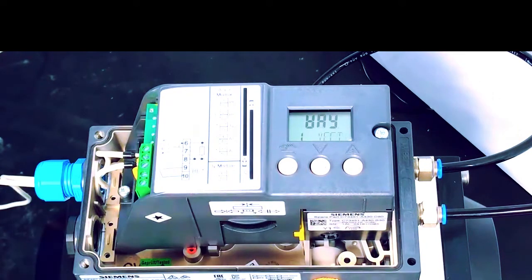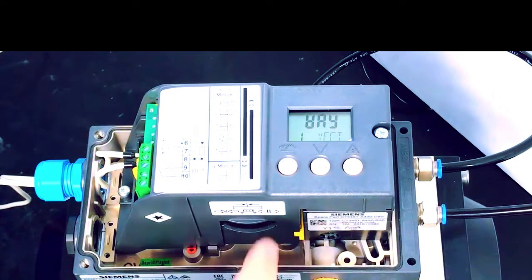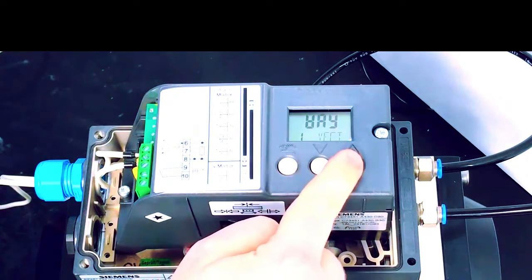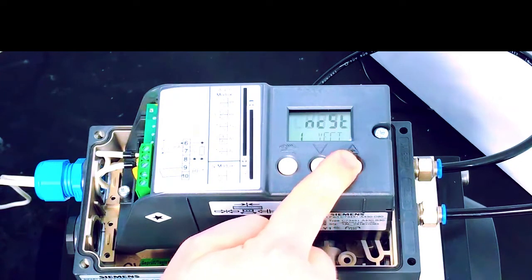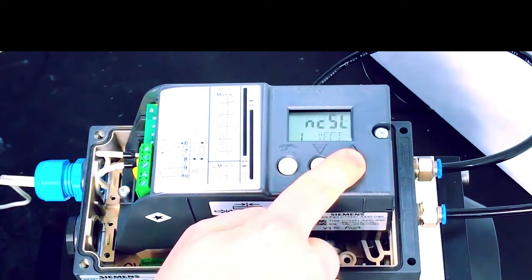The first option we're presented with determines whether the positioner knows whether it's on a linear valve or whether it's on a rotary valve. At the moment it's set to linear. We currently have it on a quarter turn rotary valve, so we're just going to use the plus and minus buttons to scroll through the options until it changes to what we want.